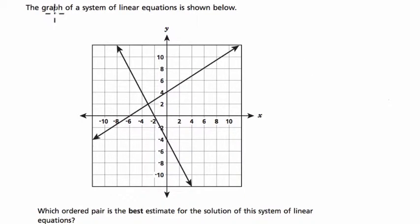Alright, so let's read the question. The graph of a system of linear equations is shown below. Which ordered pair is the best estimate for the solution of the system?